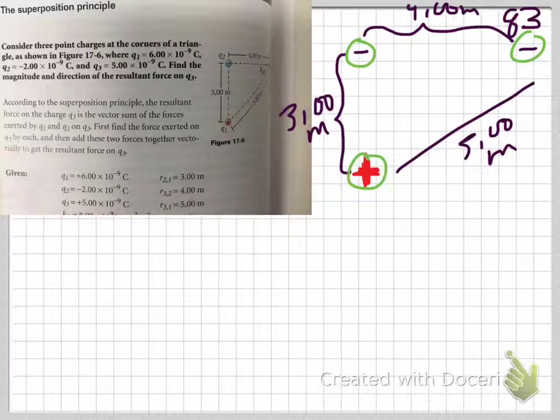It's the sum of the vector forces exerted by Q1 and Q2. This is just like any other sum of forces problem. That's all you're doing, except to find the forces, you're using the Coulomb's Law equation.